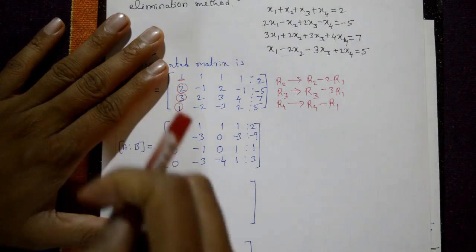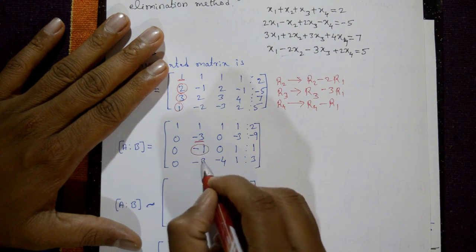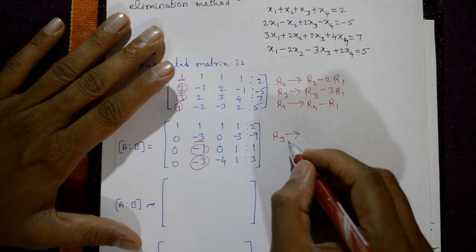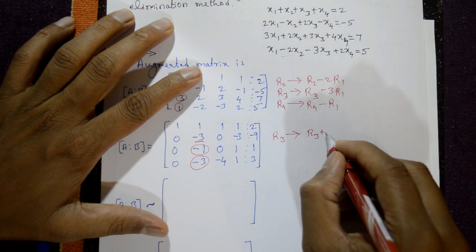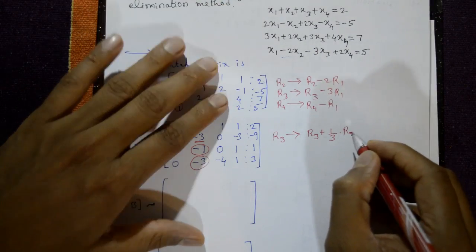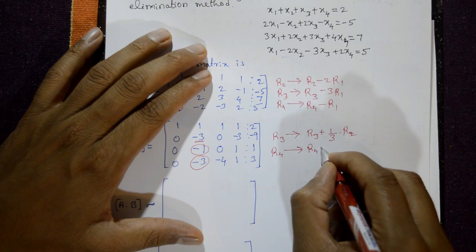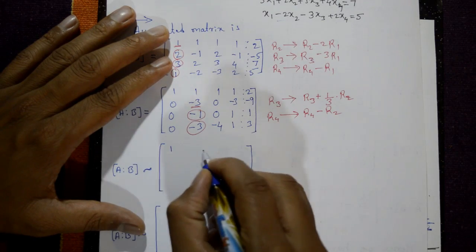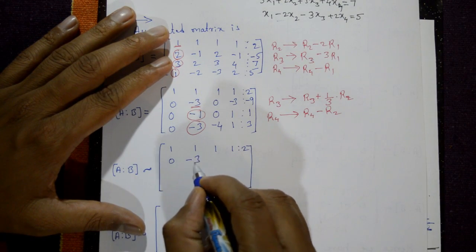The next leading number in row 2 is -3. The element below it in R3 is -1 and in R4 is -3. We need to make these zero. Apply R3 = R3 plus (1/3)·R2 and R4 = R4 minus R2. The first two rows remain unchanged.